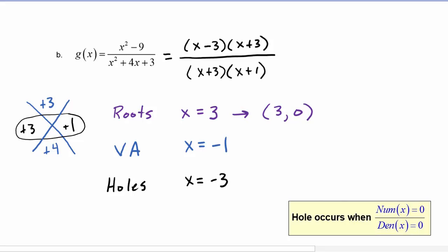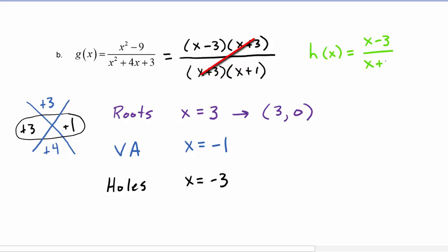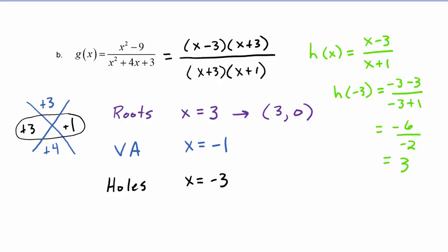To find the y-value of the hole, we create h of x equal to (x minus three) over (x plus one), which agrees with g of x everywhere except at x equals negative three. Plugging in: h of negative three equals (negative three minus three) divided by (negative three plus one) equals negative six divided by negative two, which equals three. So the hole in g of x is at (negative three, three).